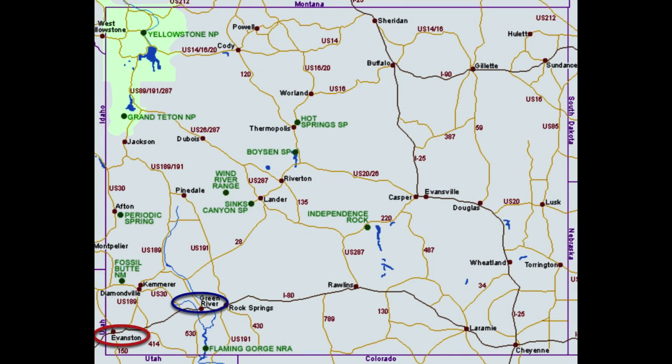On the prototype, the city of Evanston is located in southwestern Wyoming about six miles from the Utah border. It has a population of slightly over 12,000. You can see it here on a map circled in red. You can also see Green River circled in blue. Green River is located 85 miles east of Evanston and it is at the center of operations of my layout. The Union Pacific Evanston subdivision begins at Green River and runs west through Evanston to Ogden, Utah.